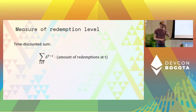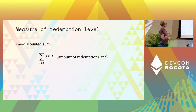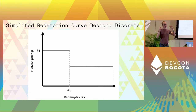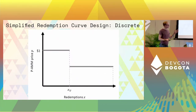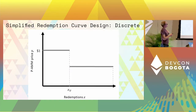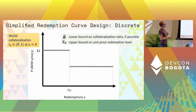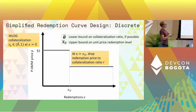Before I show you how we implement this, I have to introduce one equation. We assume that the redemption pressure is computed as a time-discounted sum. Now I'm going to show you one simplified design that satisfies almost all of the desiderata. The simplified redemption curve works as follows: we support a price of one dollar, so people can redeem at one dollar up until a certain amount of redemption. After that, we drop the redemption price so that the redemption price equals the collateralization ratio.